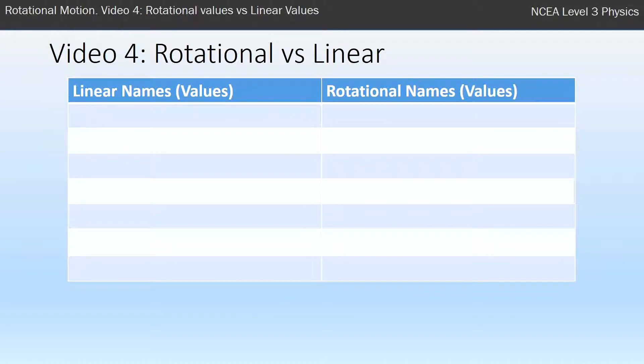Here's a table. On the left-hand side we have the linear names of ideas that you've come across in Level 2 mechanics, and then the equivalent rotational ones in Level 3 that we're meeting this year.